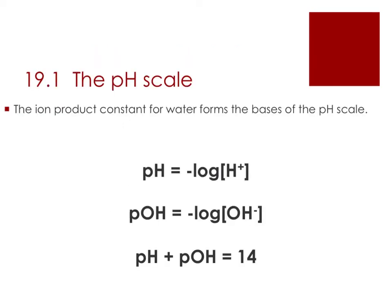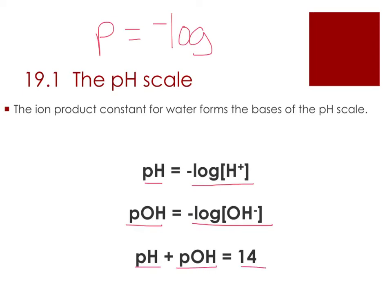We could just talk about [H+] and [OH-] for solutions, but because those numbers are really small, it becomes inconvenient. So instead we invented the pH scale. 'p' is a mathematical operation that means negative log. If we take the negative log of [H+], we get pH. If we take the negative log of [OH-], we get pOH. And in every case, pH + pOH = 14.